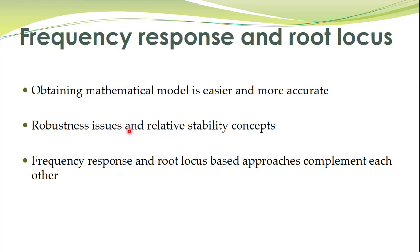There is another very important advantage of this approach: robustness issues and relative stability can be addressed using frequency domain approaches. Whenever you identify a mathematical model for a system there are many uncertainties — even after modeling, some parameters may not be accurately known, for example a spring constant. There are many other uncertainties, so a mathematical model for a process is never 100% accurate; there are always inaccuracies in the mathematical model. The question is how to design a controller that can work with the system even in the presence of those uncertainties.